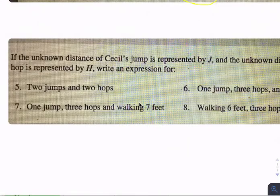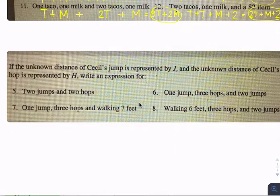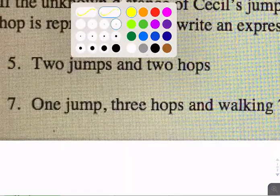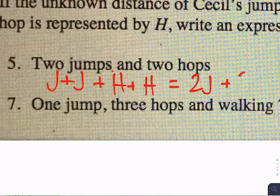The next one. If the unknown distance of Cecil's jump is represented by J, and the unknown distance of Cecil's hop is represented by H, write an expression for two jumps and two hops. Two jumps would be J plus J, and two hops is H plus H. Or you could say two J plus two H.